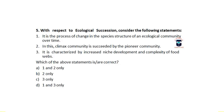The next question is: with respect to ecological succession, consider the following statements. First, it is the process of change in the species structure of an ecological community over time. Second, in this process, the climax community is succeeded by pioneer communities. Third, it is characterized by increased niche development and complexity of food webs. Which of the above statements are correct?